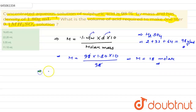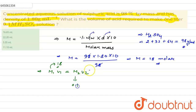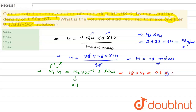The molarity equation is M1V1 equals M2V2. M1 we have as 18 molar, M2 is given as 0.1, and V2 is given as 1 liter. Putting all the values in: 18 into V1 equals 0.1 into V2.